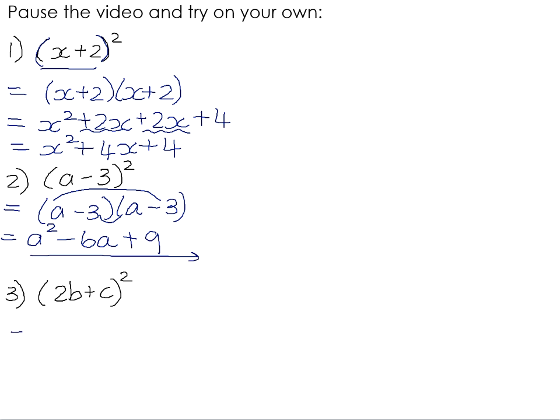And then number 3. 2b plus c all squared means 2b plus c multiplied by itself. 2b multiplied by 2b is, apologies, 4b squared. 2b times c is 2bc, and we'll have another 2bc from the inners, so altogether we'll have 4bc. And then c times c is positive c squared.